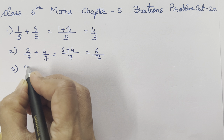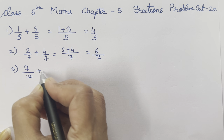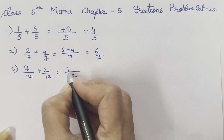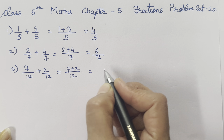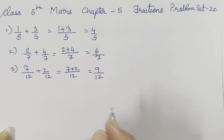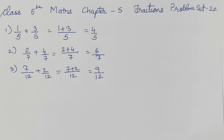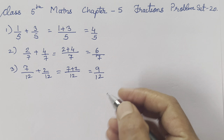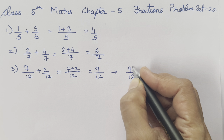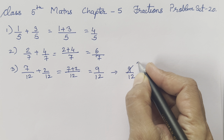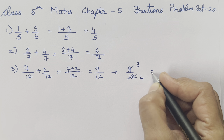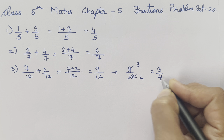Next is the third one: 7 upon 12 plus 2 upon 12. So the denominator is 12, and 7 plus 2 gives us 9 upon 12. Now this answer is also correct, but you can reduce it further. 9 upon 12 — 3 threes are 9, and 3 fours are 12, so the reduced answer is 3 upon 4.